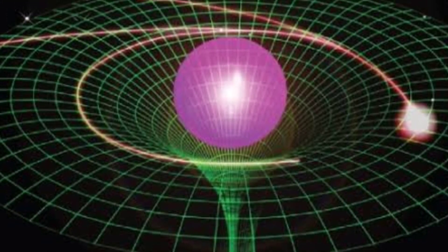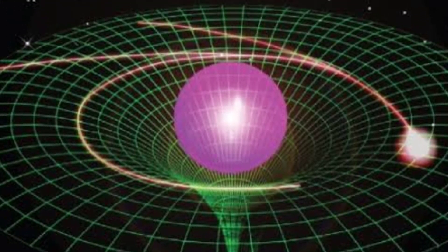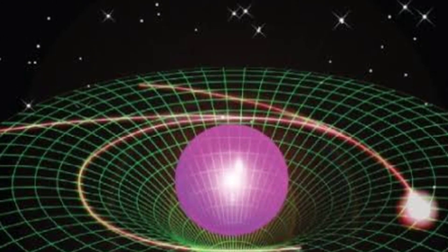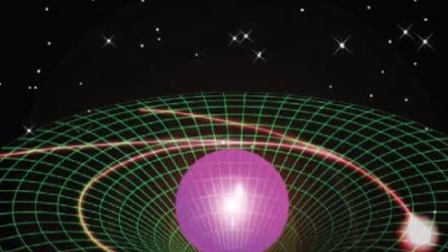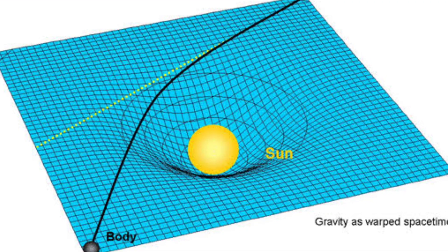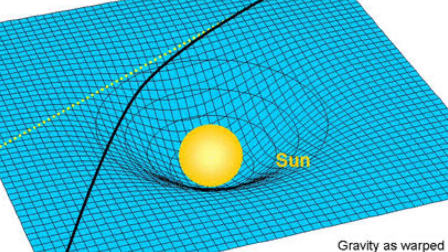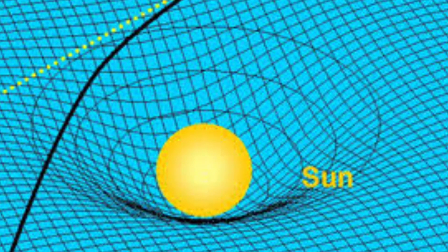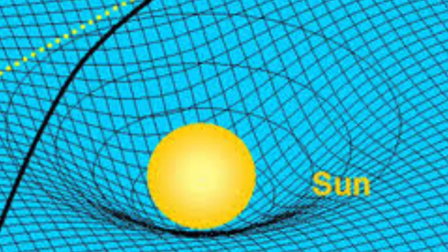This interaction is a testament to the elegance and complexity of Einstein's general theory of relativity. The ability of massless particles like light to follow curved paths in spacetime, as influenced by gravity, has been experimentally verified and continues to be a cornerstone of our understanding of the universe.